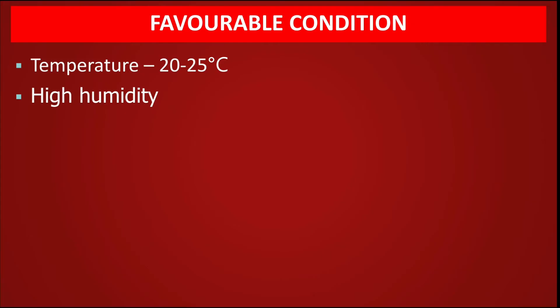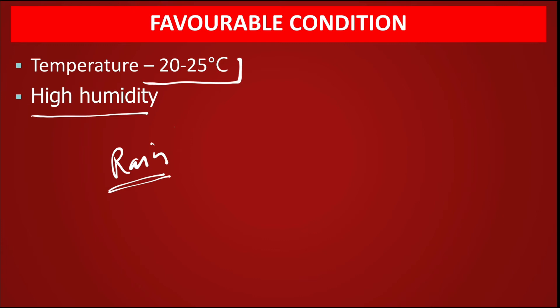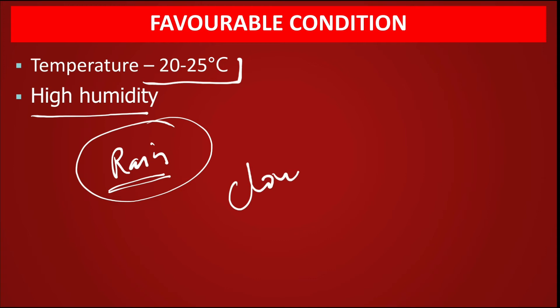Favorable conditions for alternaria blight: temperature 20–25°C, high relative humidity, and intermittent rain. If rain occurs at ear formation or ear emergence time, the disease is very severe. Cloudy weather also promotes disease development.